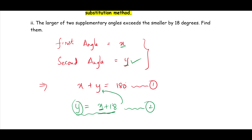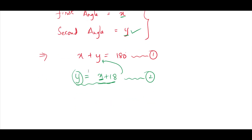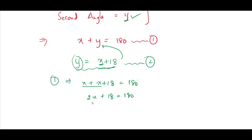Now substitute the value of y from equation 2 into equation 1. Replace y with x plus 18 in equation 1. So we get x plus (x plus 18) equals 180 degrees. That gives us 2x plus 18 equals 180 degrees. Shifting 18 to the RHS, we get 2x equals 180 minus 18.